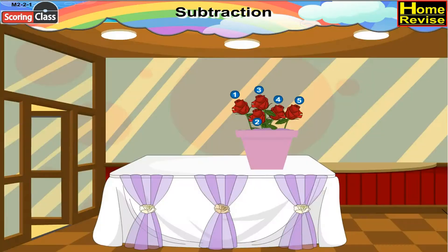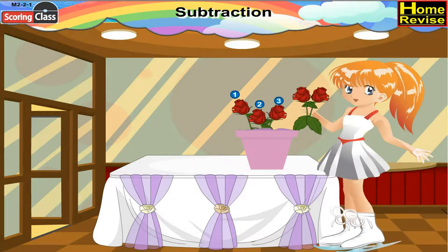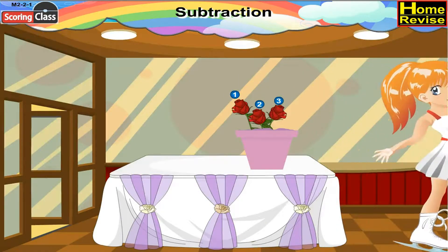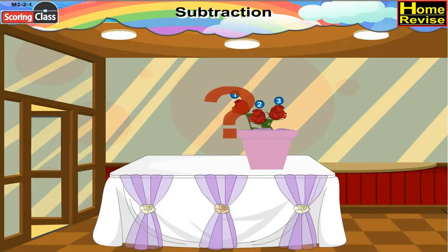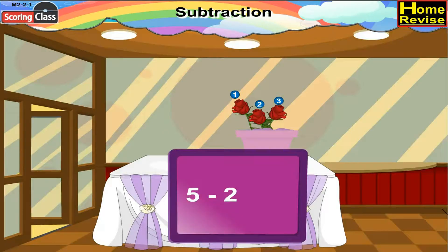Now, there is a flower pot of roses, and it had five roses. Shruti came, plucked two roses and went away. So, how many roses are left in the pot? That would be five minus two. So, three roses are remaining in the pot.